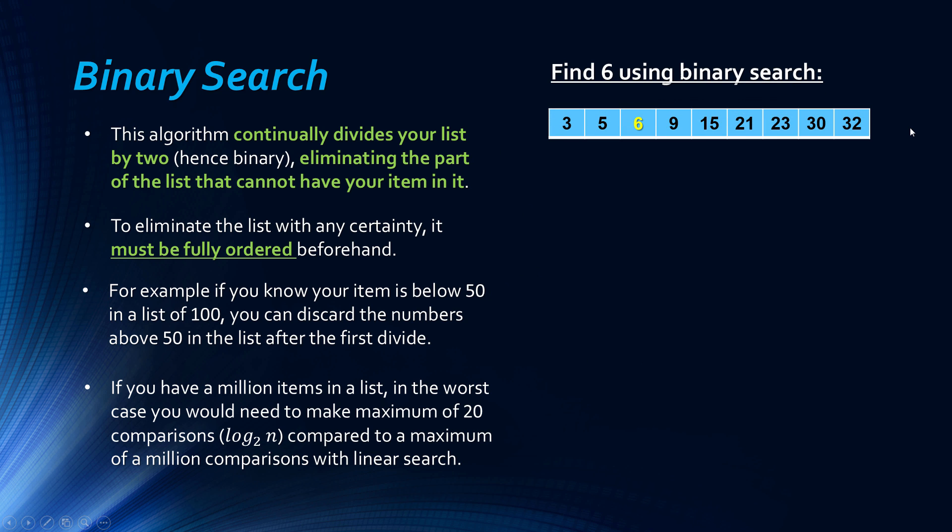So an example of finding, using binary search, and that's to find six, in this case we're going to use a wider list. So the first thing we need to do is check that it's in order, and it is, it's in ascending order, and we'll look at why it's important in a second. So the first thing we can do, we can halve this list, and we'll halve the middle value in this list is 15.